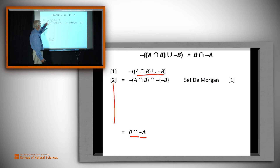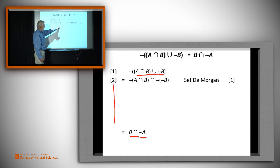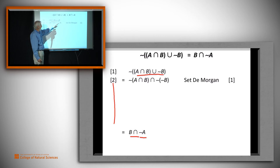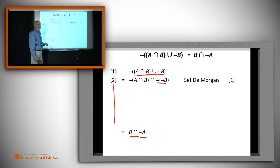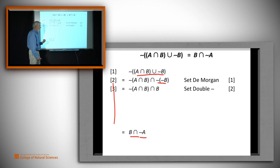The easiest way to do that is with De Morgan's identity. Instead of a complement of a union, we now have the intersection of two complements. So the original expression becomes the complement of A intersect B, intersected with the double complement of B. But the right hand side has no double complement, so using the double complement property, we replace the double complement of B simply with B.